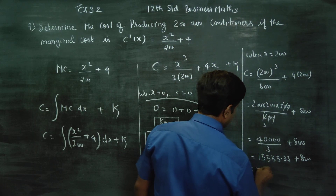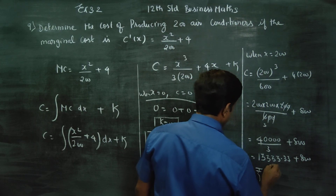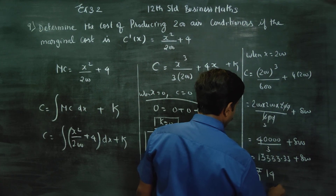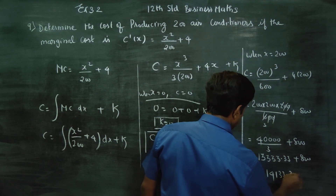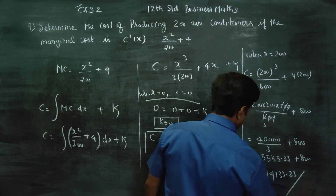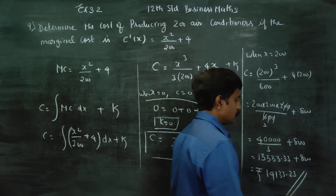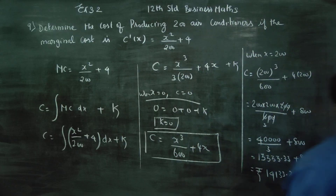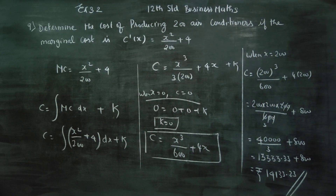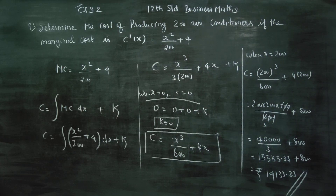Therefore, the answer will be Rs. 14133.333. This is your final answer — that is the cost for producing 200 air conditioners. Thank you.